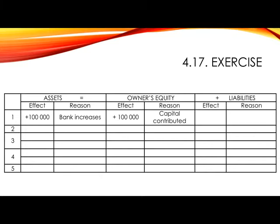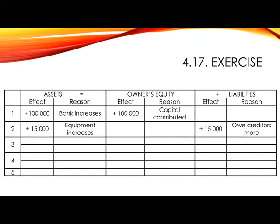Number 2. Bought equipment for 15,000 Rand on account. The two accounts involved will be equipment, which you bought, and creditors, as you bought on account rather than paying immediately. We will therefore show in assets plus 15,000 as equipment increases, and in the liabilities column, plus 15,000 as we owe creditors more — alternatively, you could write creditors increases.